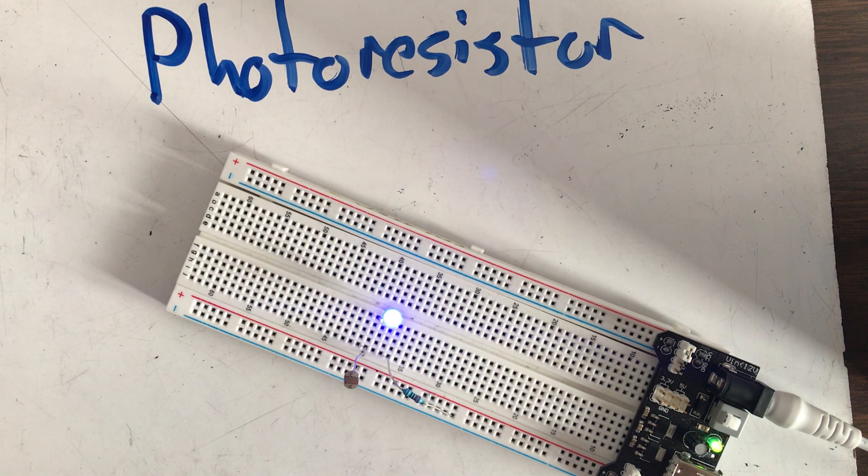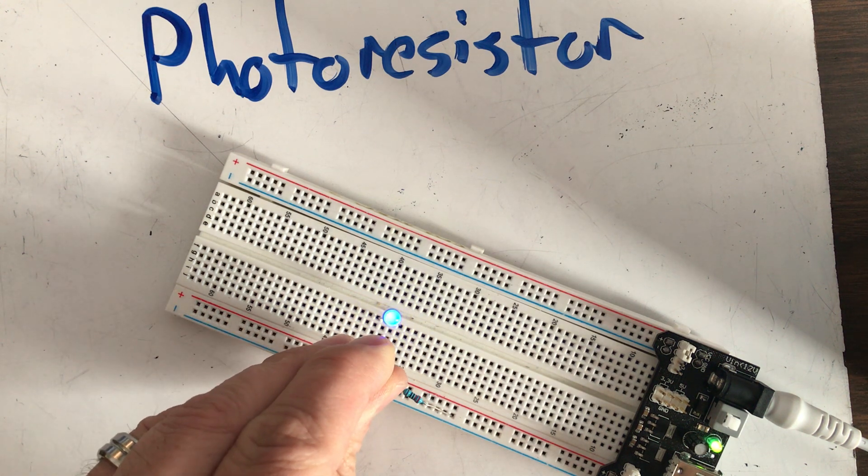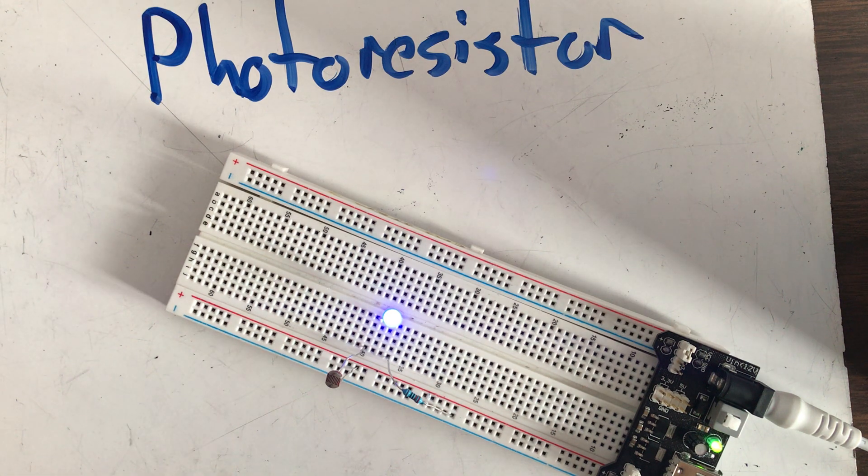And you can see that I have a blue light. It's pretty bright in this room. So what I'm going to do is I'm going to make it darker by covering up the head of the photoresistor. And you can see that my light dims quite a bit. And then when I make it bright, it gets brighter.